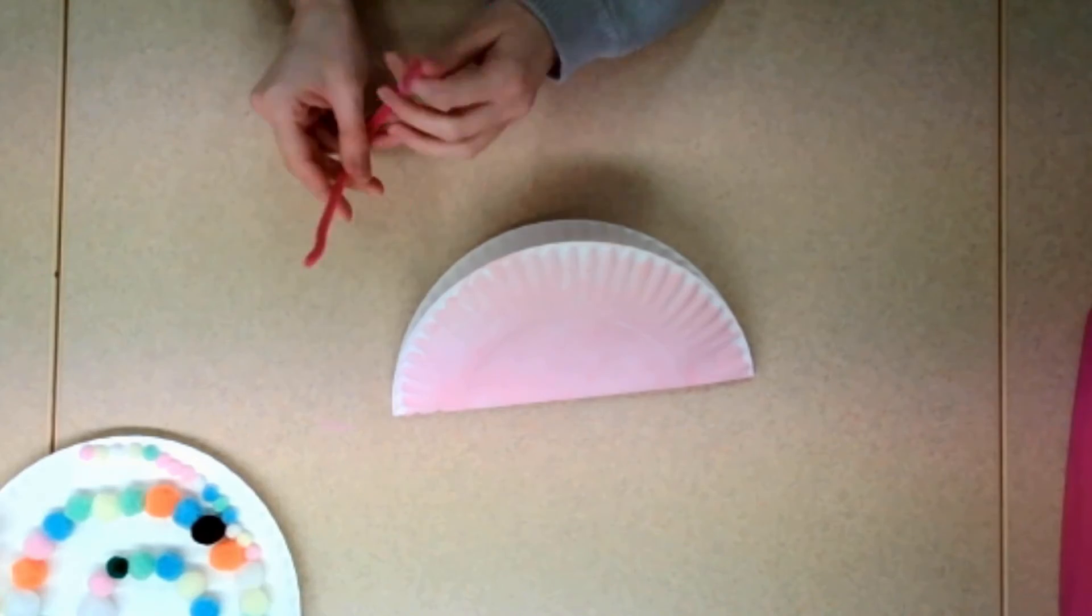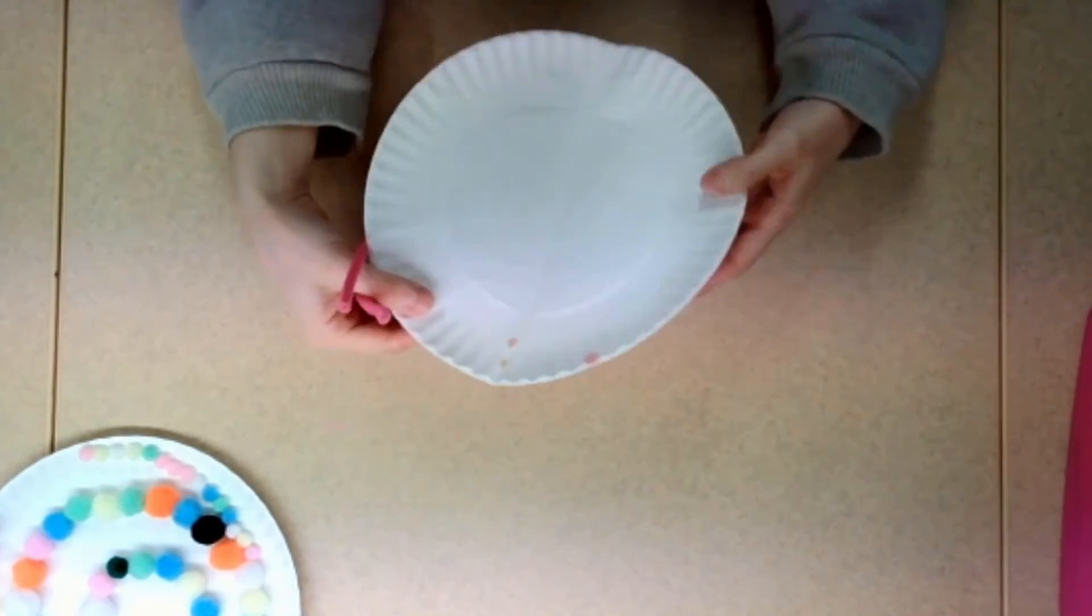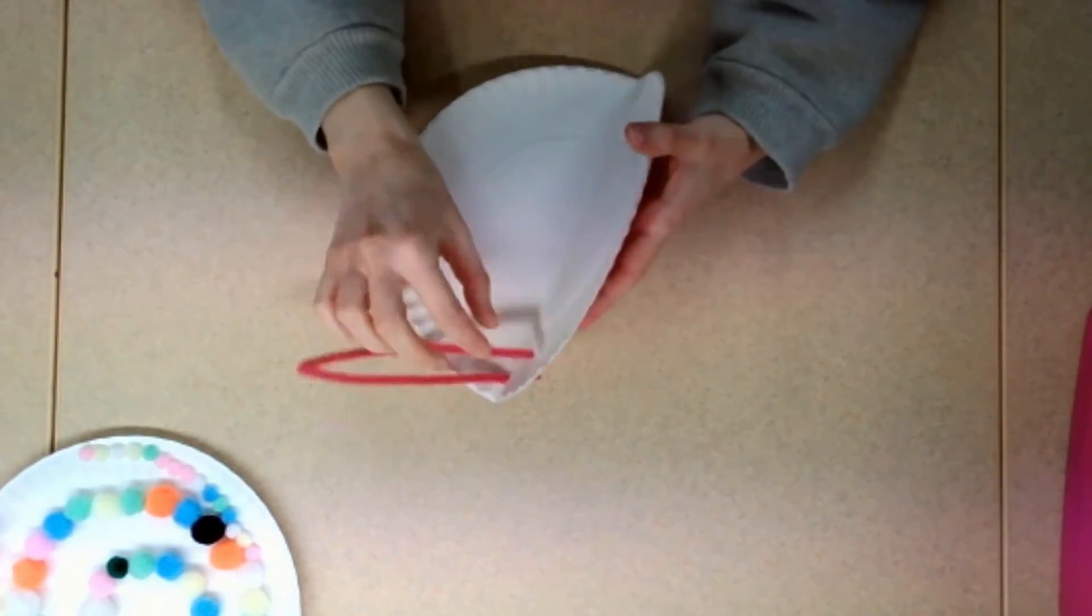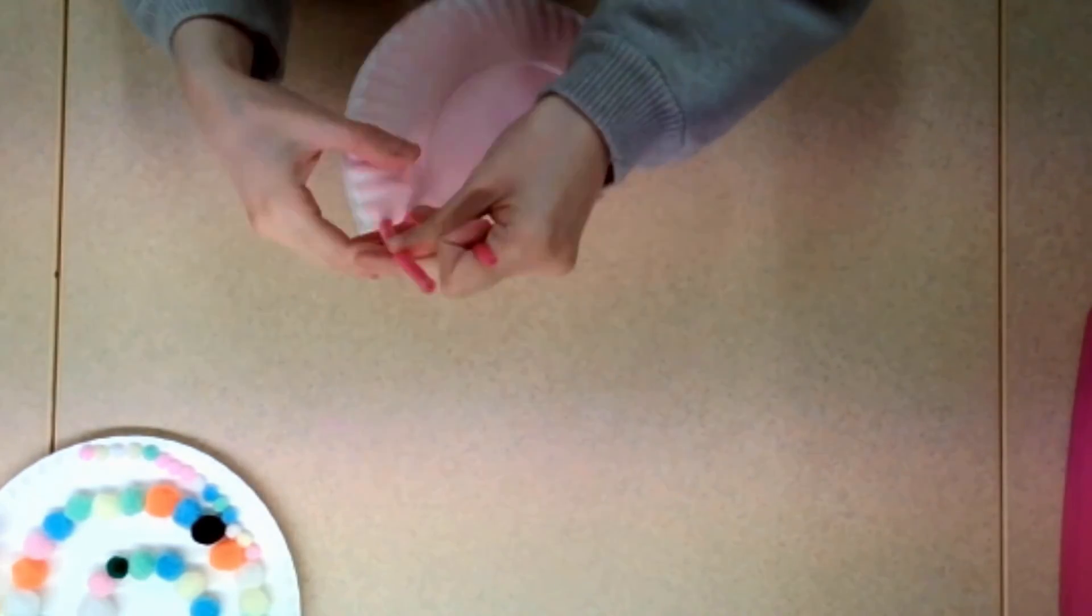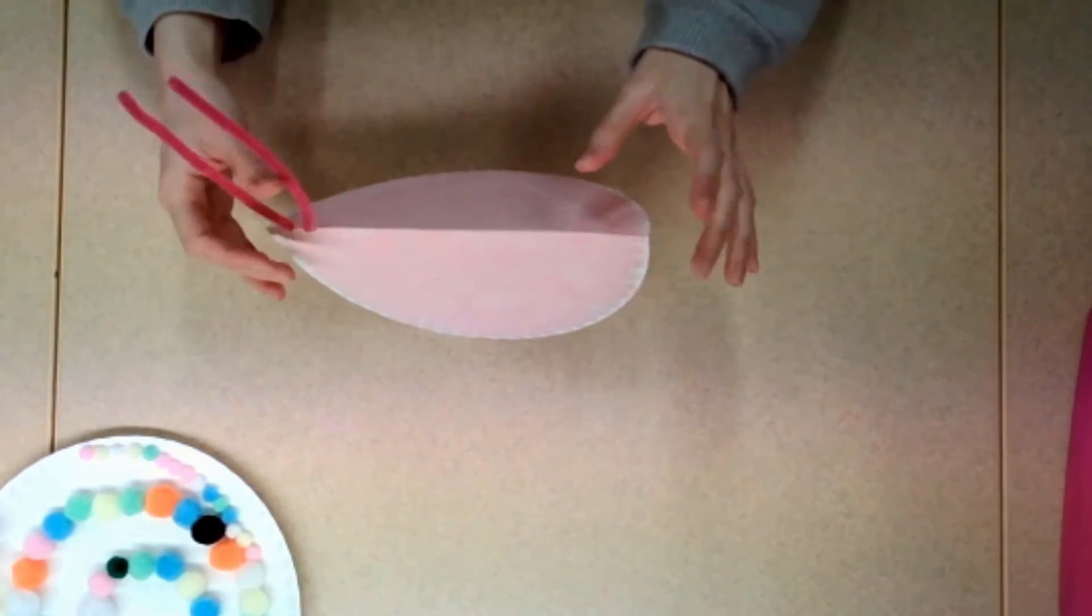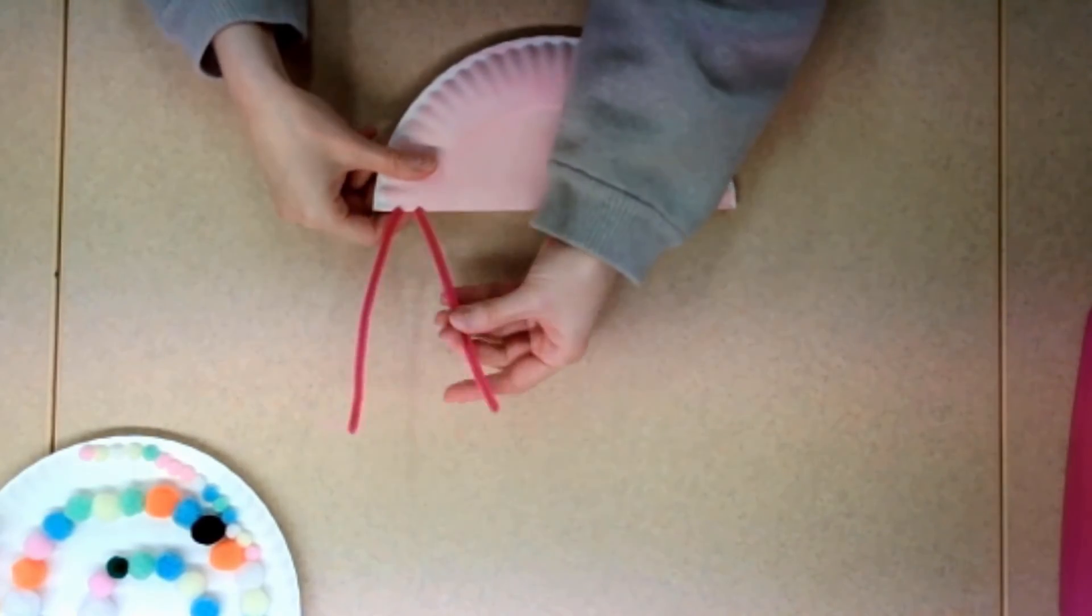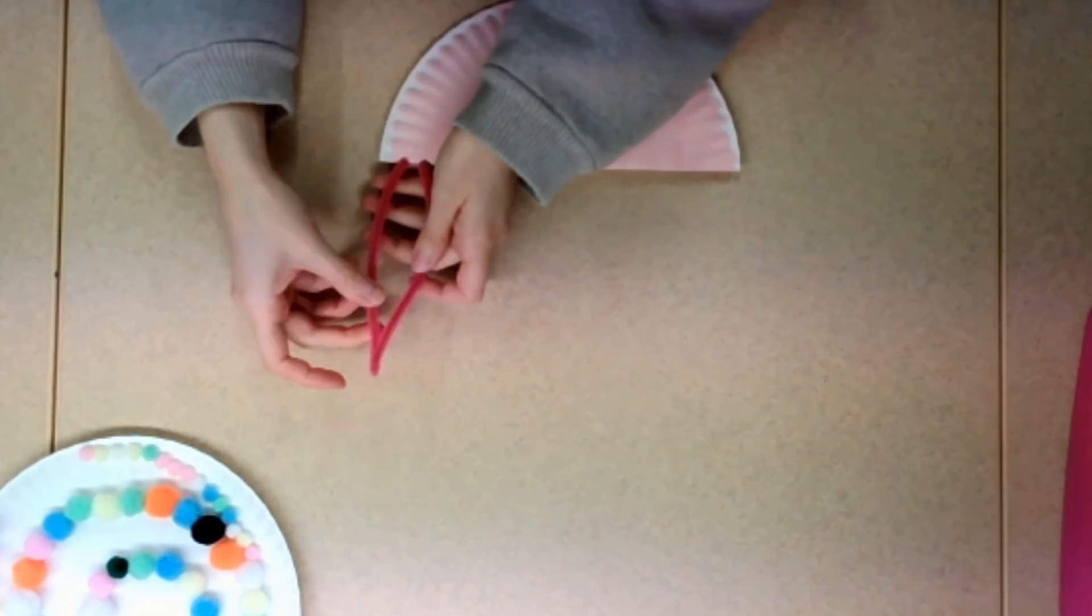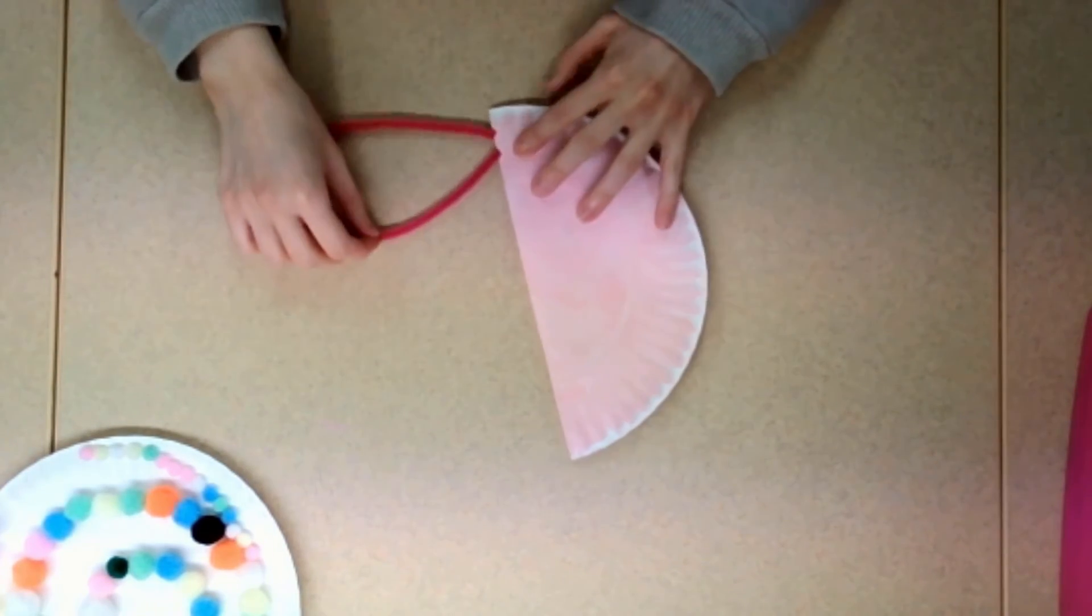Using your pipe cleaner, thread each end through the holes you just cut out. If you'd like, you can trim your pipe cleaners so they're not so long.